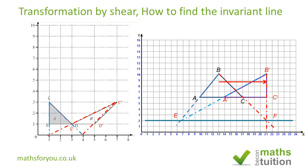To confirm, the displacement from B to B prime is 8 units, and the distance from the invariant line to B is 8 units, so the shear factor is 8 divided by 8, which equals 1. From A to A prime is 4 units, and from the invariant line to point A is 4 units, so dividing 4 by 4 gives a shear factor of 1 again.